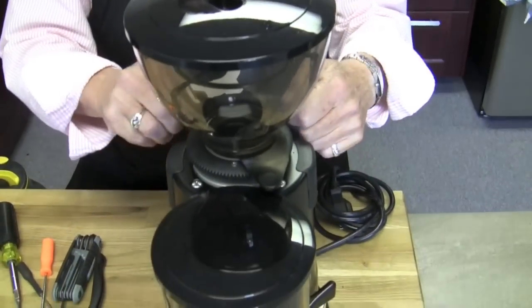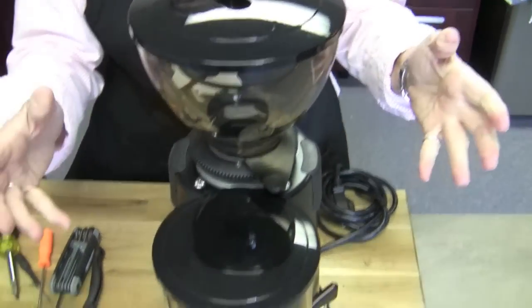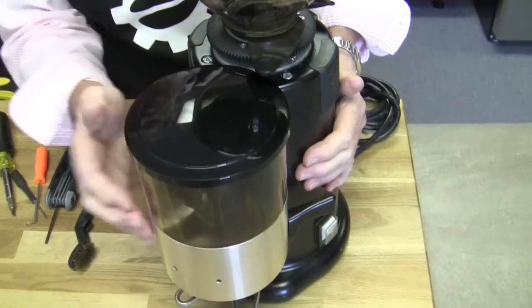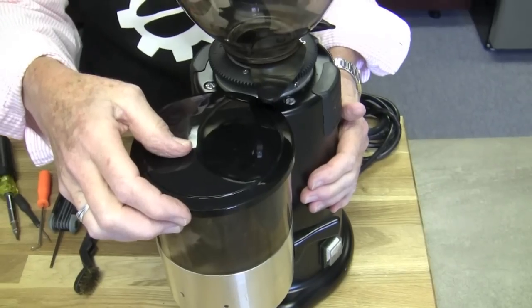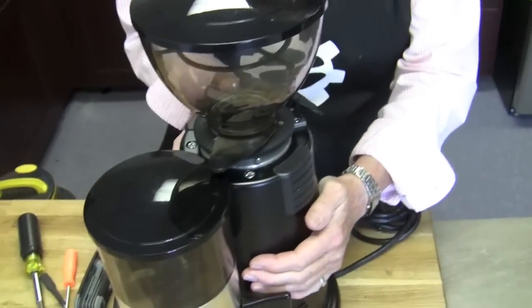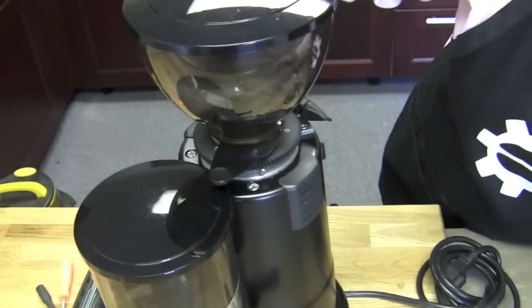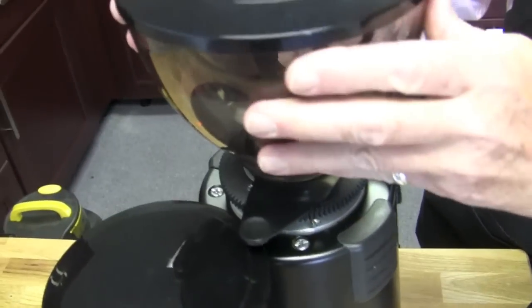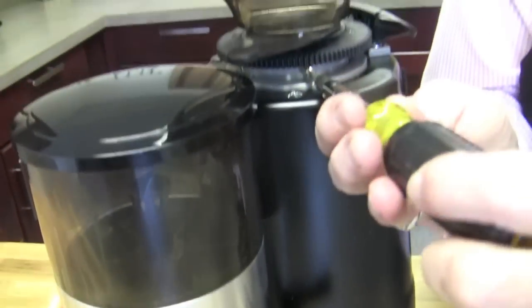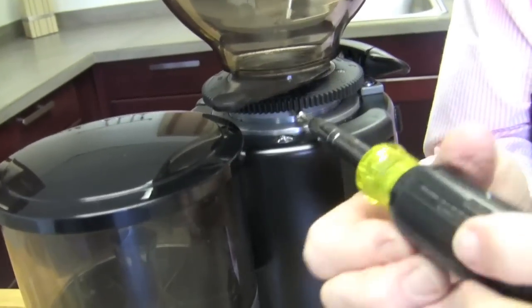So you're going to guide me through cleaning a Maycap grinder. This is the Maycap Doser grinder, the M4. First off, on these grinders, this holds the bean hopper in. Right now, we cannot take this bean hopper out. You've got to back this out. That will screw down there. It's a stop.